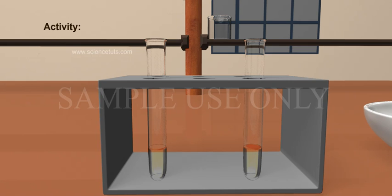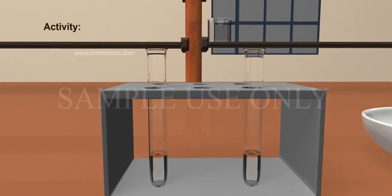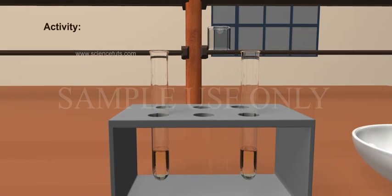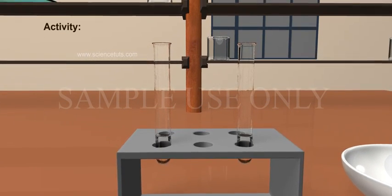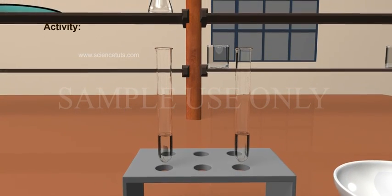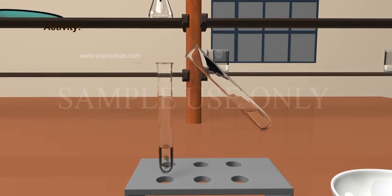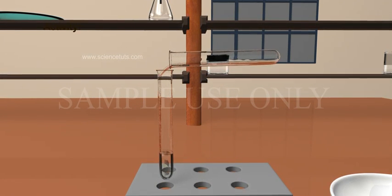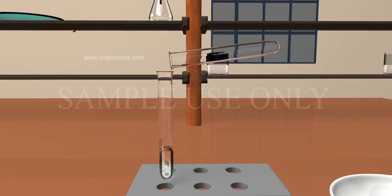Activity: Take some sodium sulfate solution in a test tube. In another test tube, take some amount of barium chloride solution. Mix the two solutions and observe carefully.